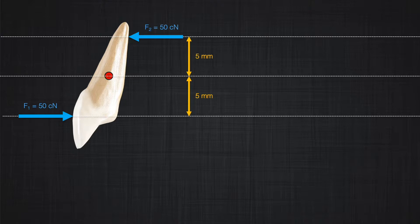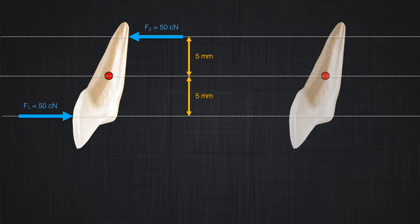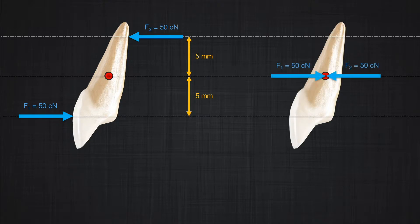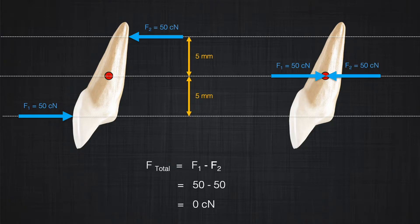If you remember from the previous discussion on equivalent systems, to see what happens to the tooth, we just move the force to the center of resistance and draw the moment that force produced. F1 and F2 apply 50 centinewtons in opposite directions to the center of resistance. Therefore, they cancel each other. How about the moment?